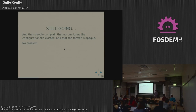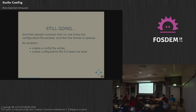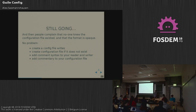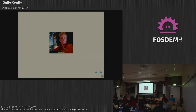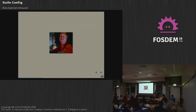But then some people start complaining that the configuration file isn't there by default and they don't really know what syntax it's supposed to have — it's all quite opaque. So then what you do is create a config file that is automatically written, make sure it's created when it doesn't exist on the first run, and add comments to the configuration file to make sure people understand it when they look at it and start to modify it.